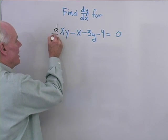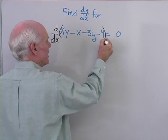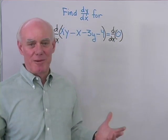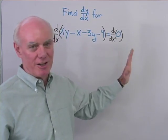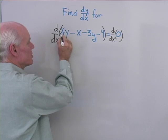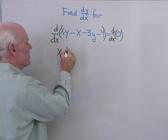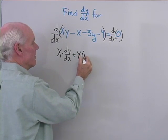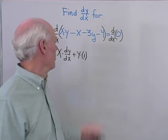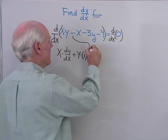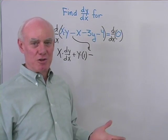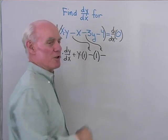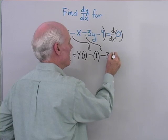I'll differentiate left to right, finding the derivative with respect to x. This is just notation telling me I'm using implicit differentiation. This is the product of two functions of x, so I'll differentiate with the product rule: the first times the derivative of the second, plus the second, which is y, times the derivative of the first, which is 1. That's the product rule for this function. Minus the derivative of x with respect to x, which is 1. Minus 3 times the derivative of y with respect to x, which is 3 times dy/dx.